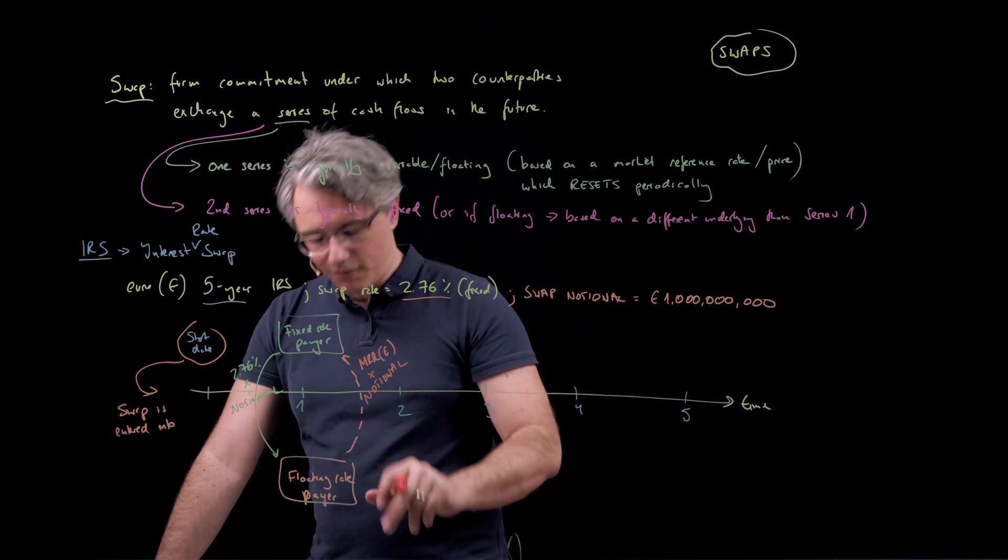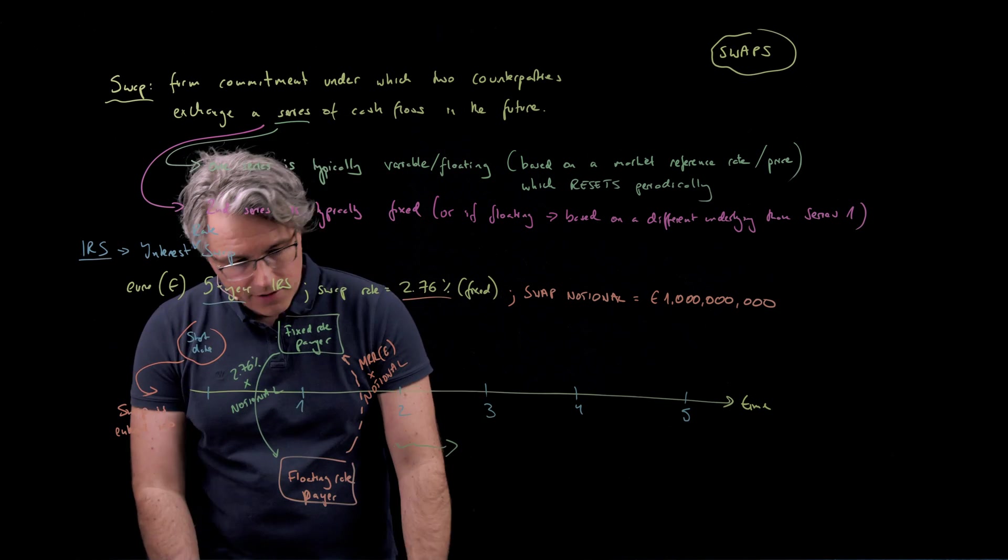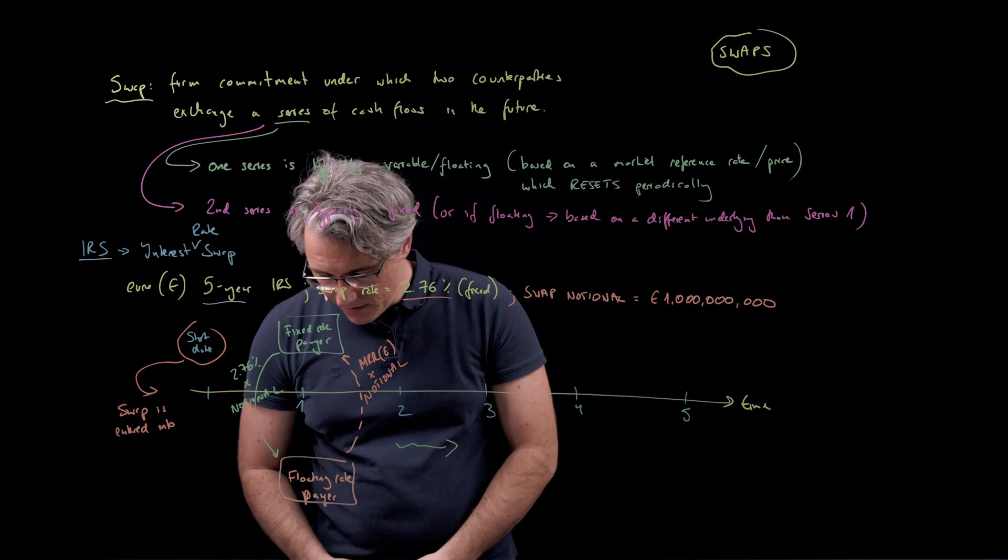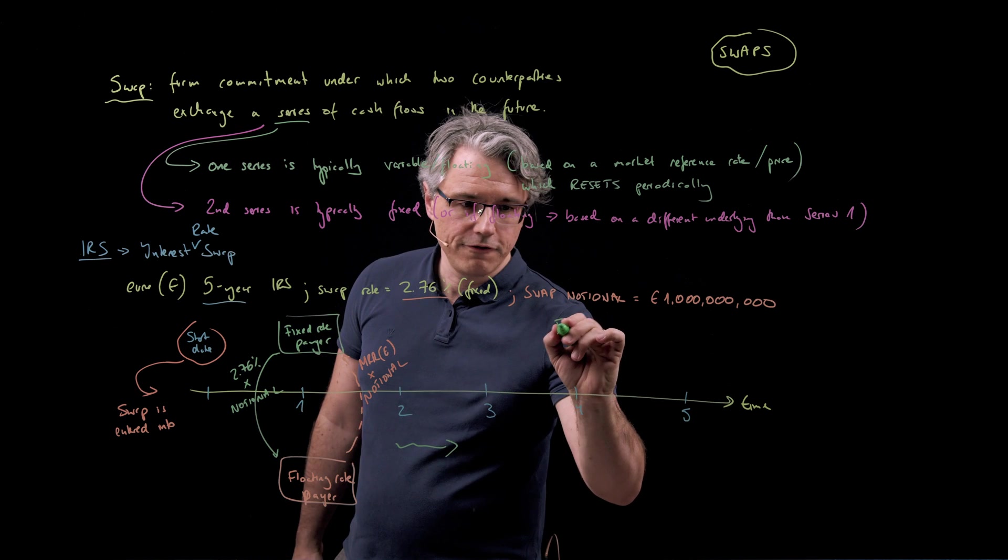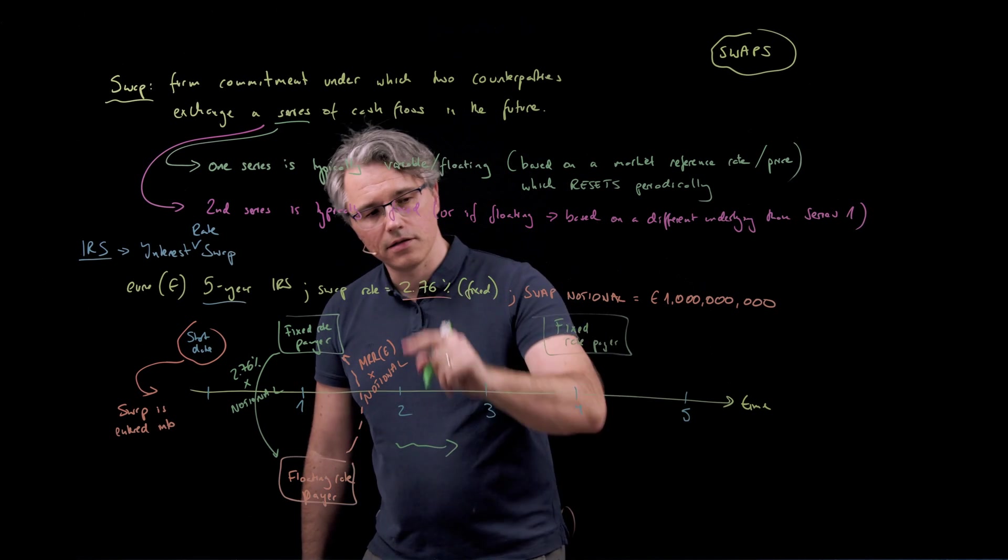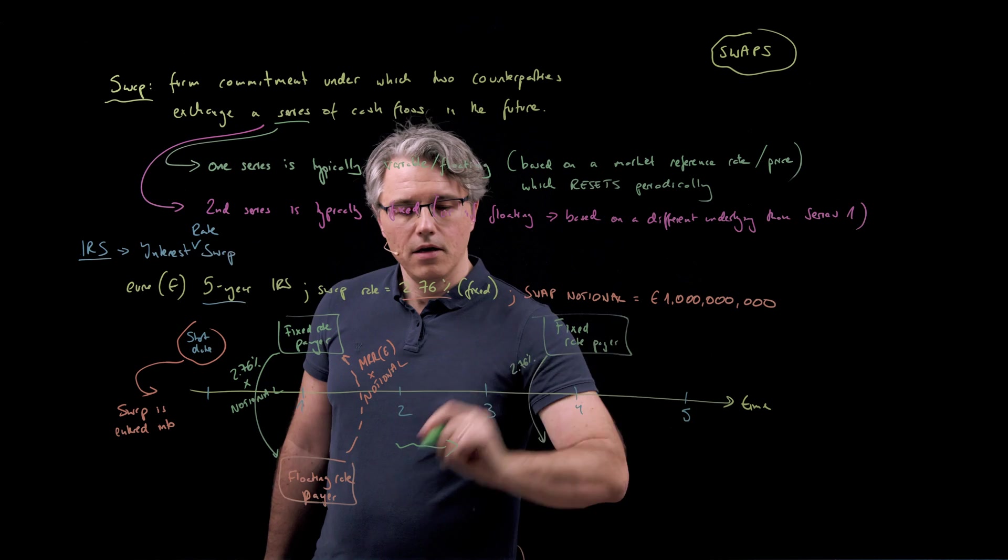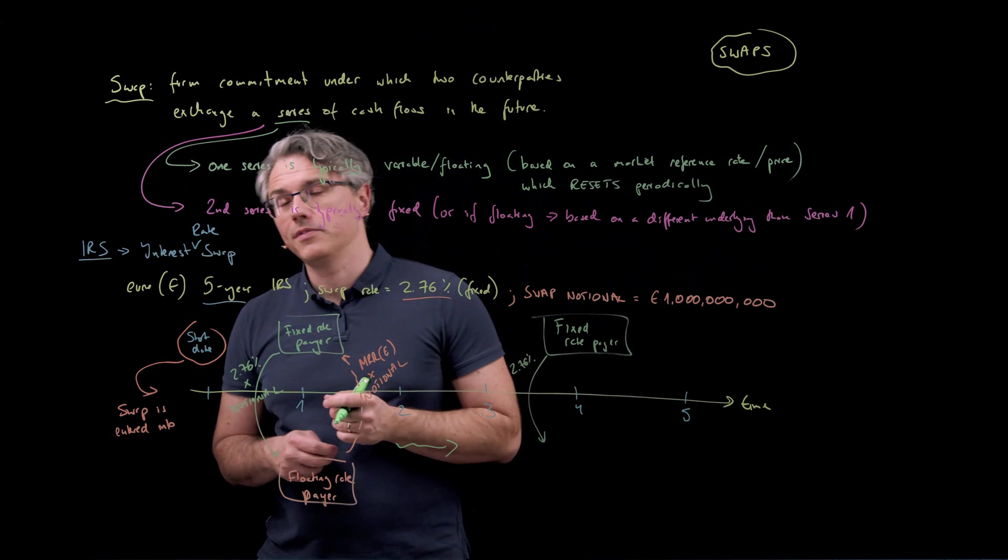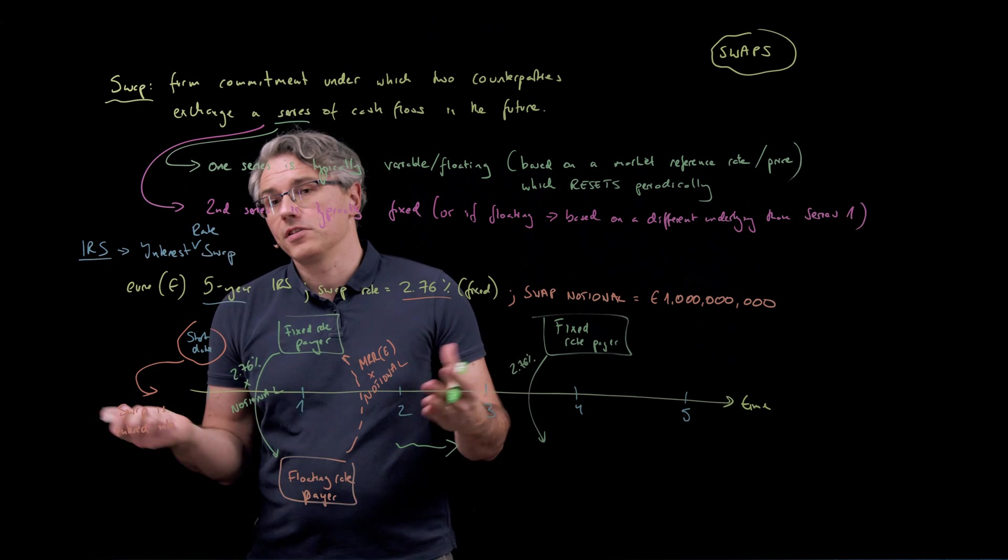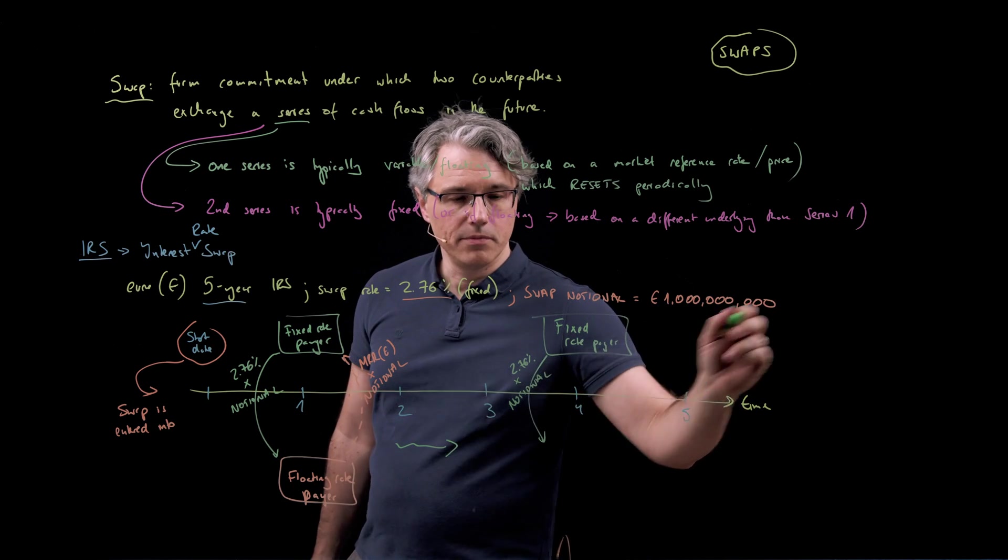So whereas one side pays something fixed and obviously continues doing so across time, on every one of these settlement dates, so I'm omitting the second one simply because I don't have space here and the third one, let's jump ahead to over here, we still have the fixed rate payer paying that pre-agreed locked in fixed 2.76% on a per annum basis. If settlement happens more frequently than once per year, you would scale this down to, for example, a quarter or a six-month period multiplied by the notional which is one billion euros.